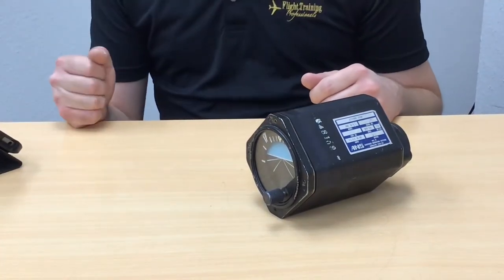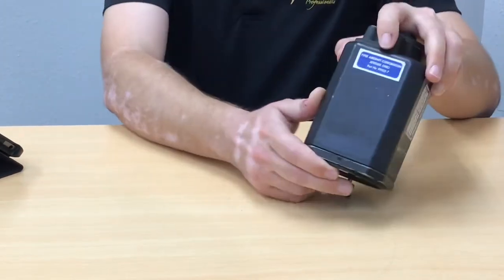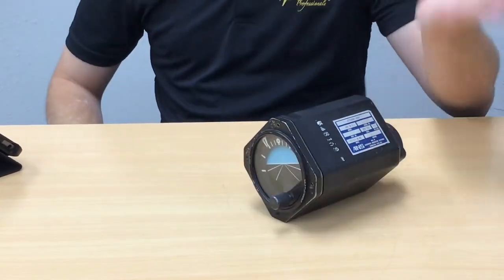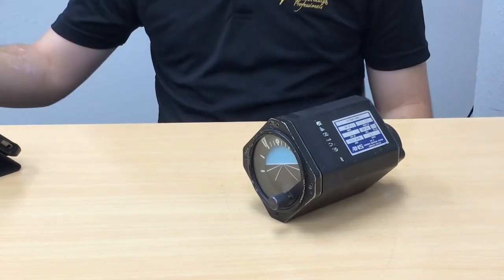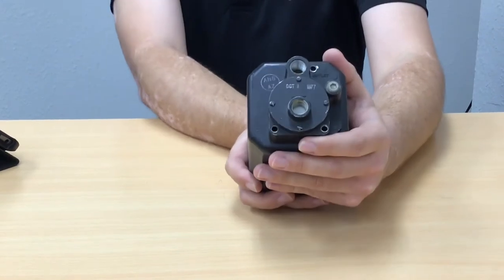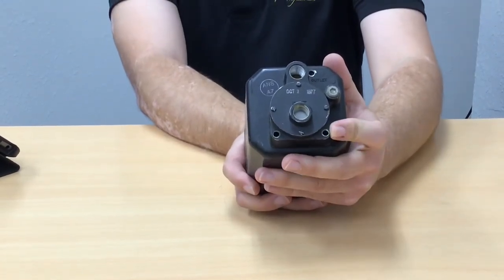So this particular attitude indicator came from a Piper, it actually says Piper aircraft up there. But it functions exactly the way the attitude indicator we have does. So if you look at the back of our instrument case here, we have three openings. We have an inlet, outlet, and gauge.